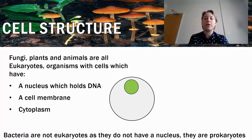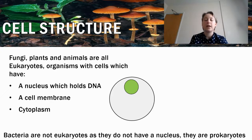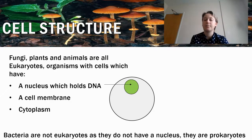Now we're going to look at the cell structure of fungi. Fungi actually belong to a group of organisms called eukaryotes, and this includes fungi, plants, and animal cells. They all have a similar cell structure, which includes a nucleus — shown in green — which holds all of the DNA that controls the cell and everything that it does.